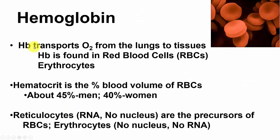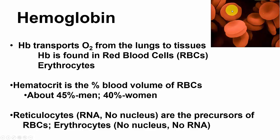Hemoglobin transports O2 from the lungs to the tissues and is found in red blood cells. Red blood cells are indented in the center and have no nucleus, which allows them to deform easily and squeeze through small capillaries.